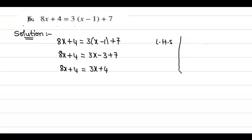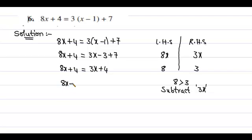We compare the coefficients of the terms containing variables on the left-hand side and right-hand side. On the left, the term with the variable is 8x, so the coefficient of x is 8. On the right, the term with the variable is 3x, so the coefficient of x is 3. When we compare 8 with 3, we have 8 is greater than 3, so we subtract the lesser coefficient term. We subtract 3x from both sides of the equation.